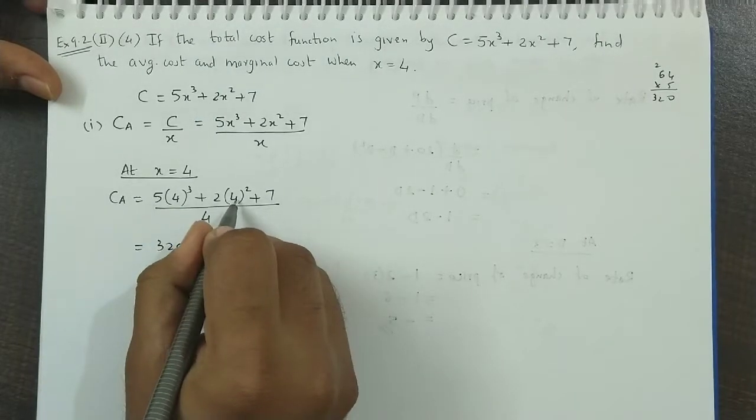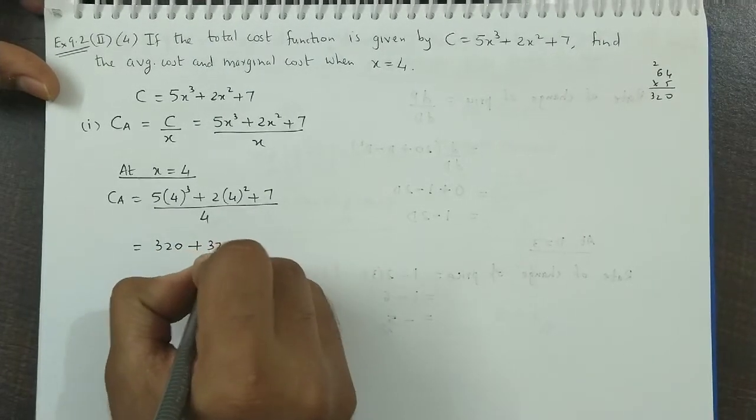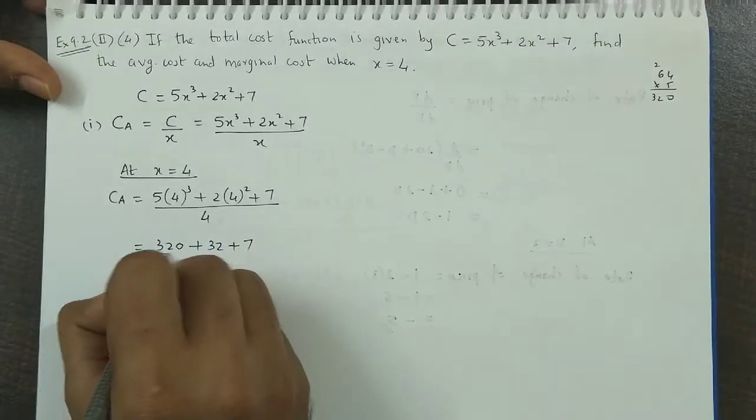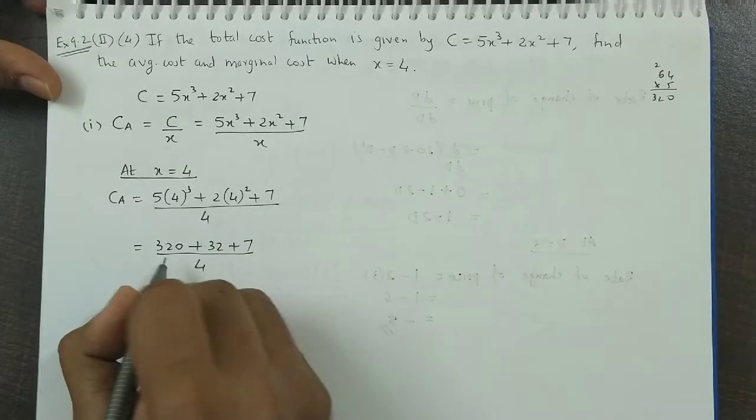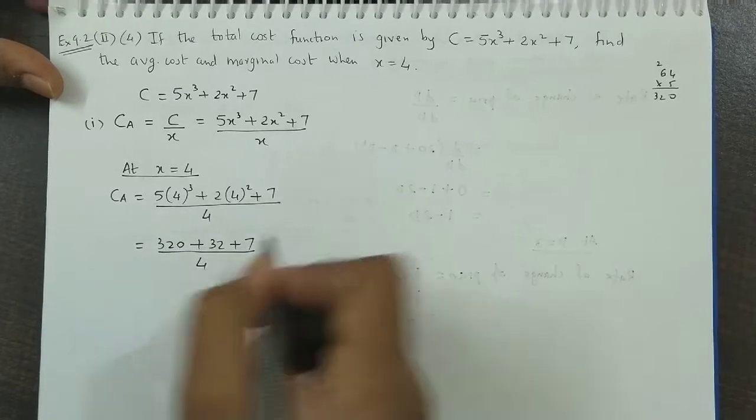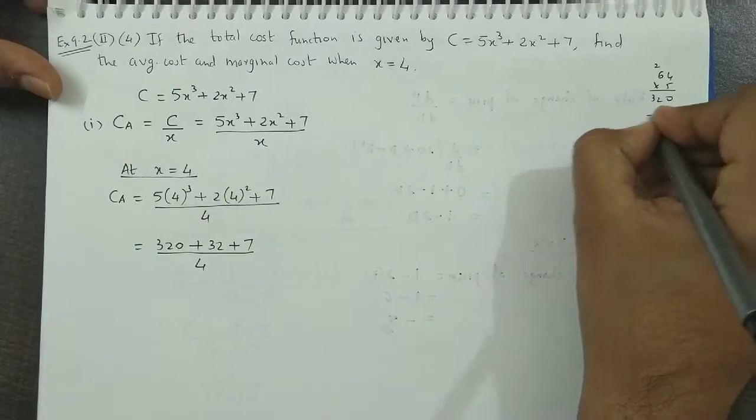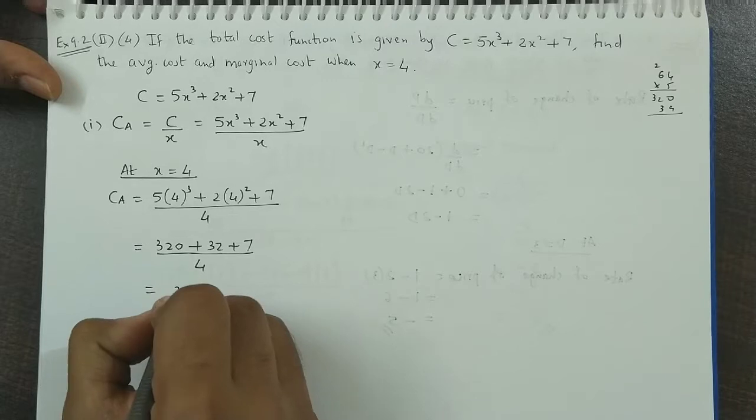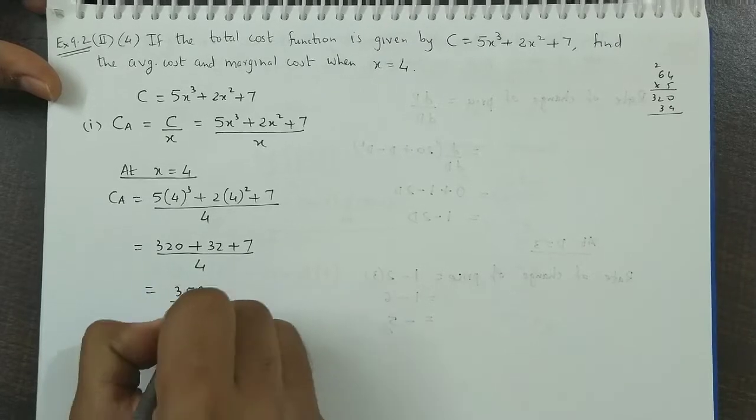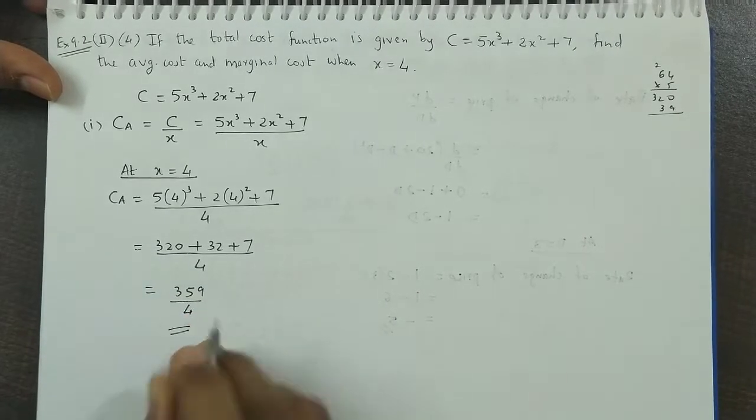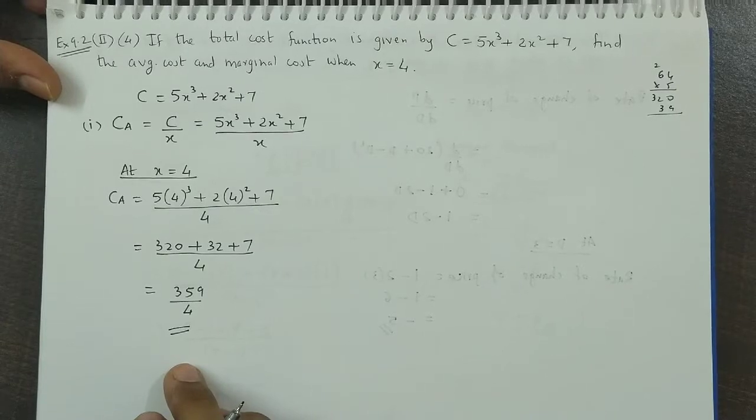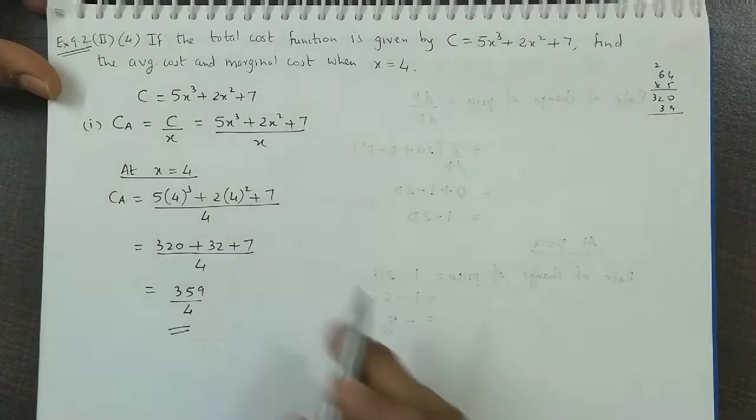320 plus... this is 16 into 2, that is 32, plus 7 divided by 4. Now 320 and this is 39. So this is 39. So this is 359 divided by 4. So this is the average cost, that is cost per unit at x = 4.